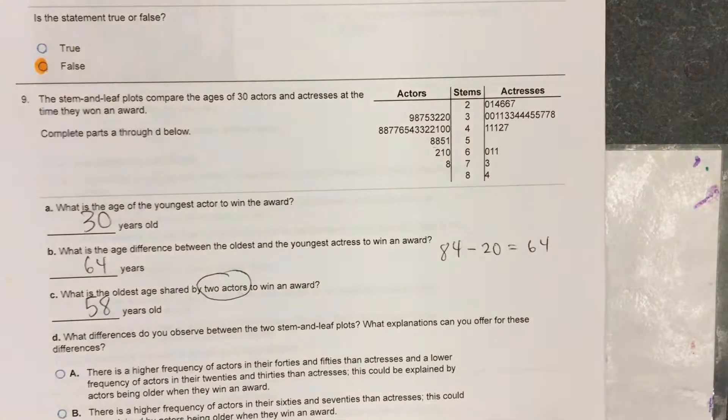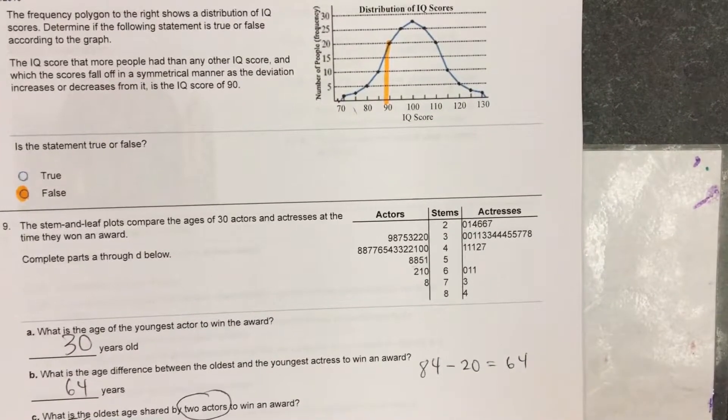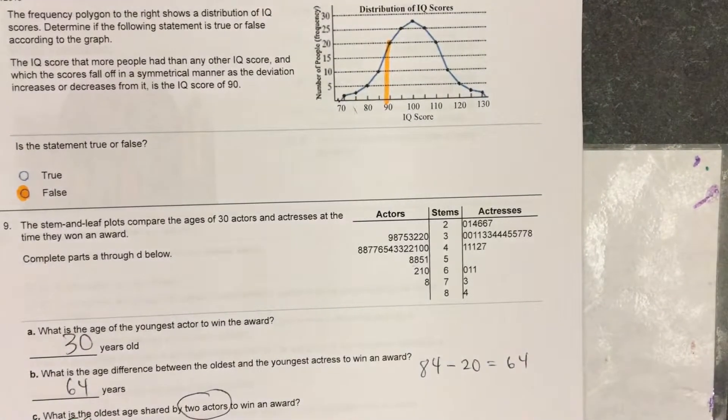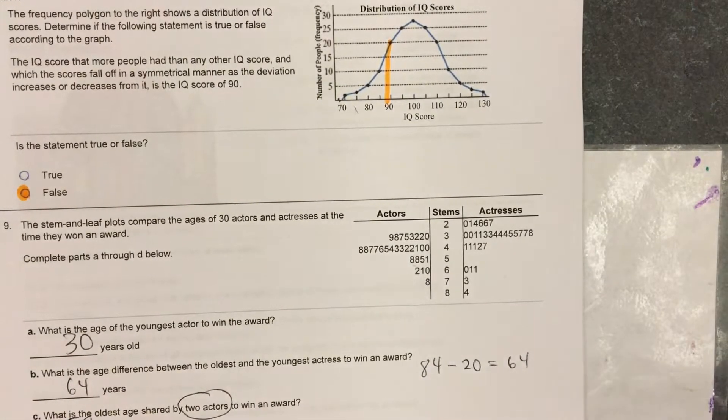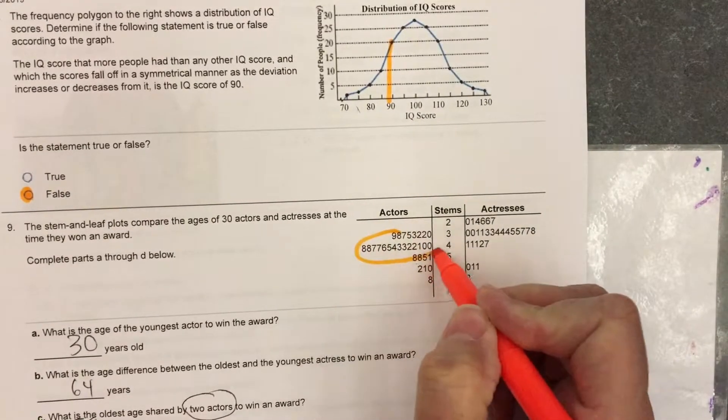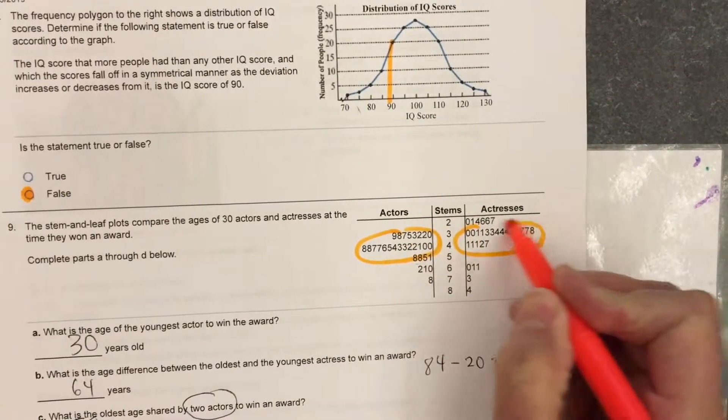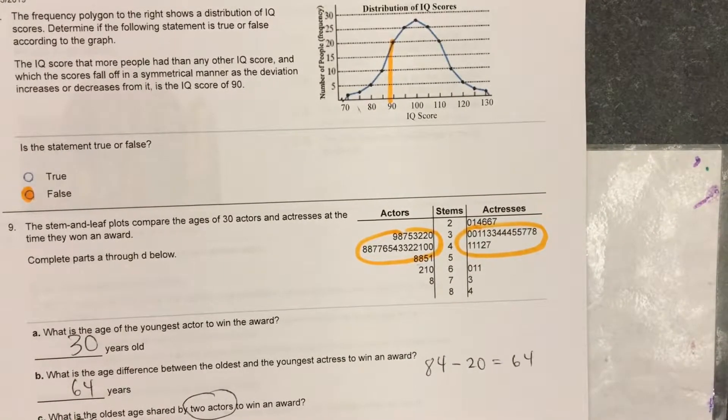What differences do you observe between two stem and leaf plots? What explanation can you offer for these differences? As you look at this stem and leaf plot. Well, there's a higher frequency of actors in their 30s and 40s than actresses. I'm going to circle that. There are a lot more actors in their 40s, but there's more actresses in their 30s. Let's see what the choices are.